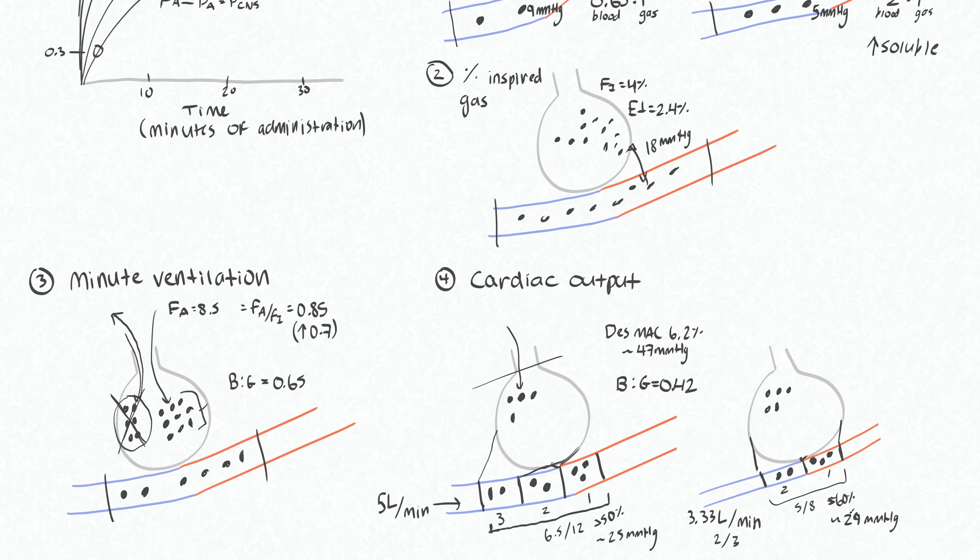So in our state with the decreased cardiac output, a third less cardiac output here actually made the partial pressure of the gas being delivered to our brain higher than when our cardiac output was high.